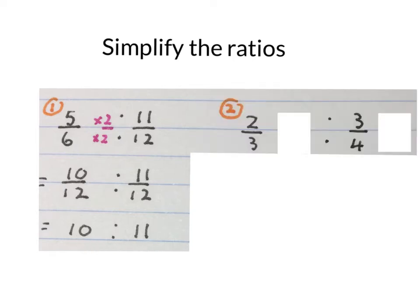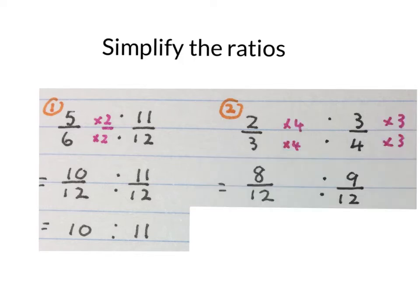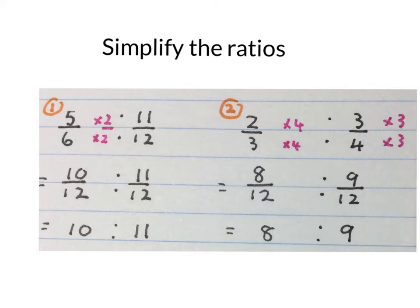Let's do one more of these. If you have 2 thirds to 3 quarters and you have to simplify the ratio, look for the lowest common denominator of 3 and 4 which is 12. Then you multiply the 3 with 4 to get 12 and you do the same at the top. 2 thirds become 8 twelfths and 3 quarters become 9 twelfths. Again we can leave out the denominators now and the simplified ratio is 8 to 9.